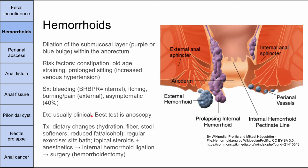Next is hemorrhoids, defined as a dilation of the submucosal layer within the anorectum — usually a purple or blue bulge seen on exam. These involve the veins going down into the anorectal region. There are internal hemorrhoids and external hemorrhoids, divided by the pectinate line. Anything proximal to the pectinate line is an internal hemorrhoid; anything originating distally is an external hemorrhoid. Risk factors include constipation, old age, prolonged straining and sitting — essentially anything causing increased venous hypertension in that region.